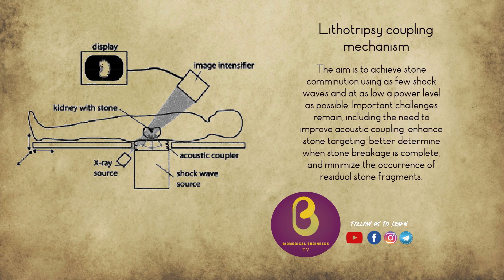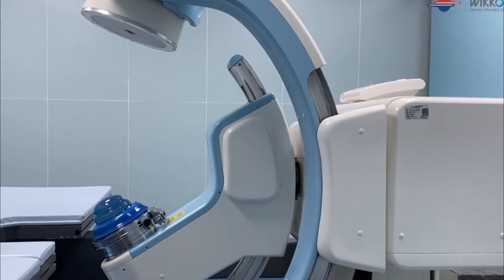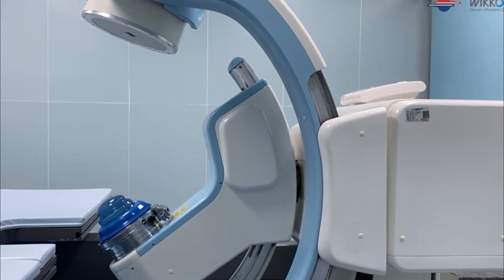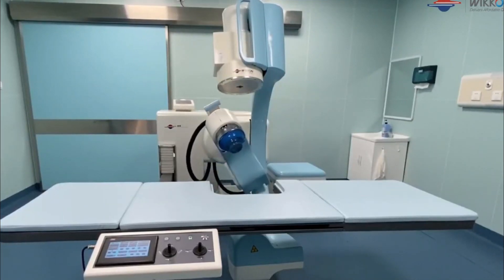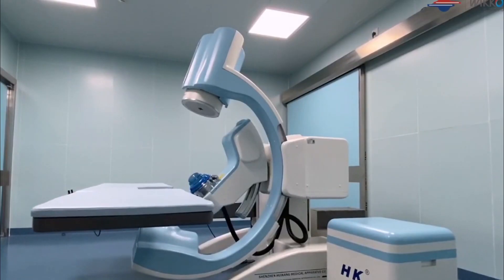In first generation lithotripters like the Dornier HM3, the patient was placed in a water bath. With second and third generation lithotripters, small water-filled drums or cushions with a silicone membrane are used instead of large water baths to provide air-free contact with the patient's skin. This innovation facilitates treatment of calculi in the kidney or ureter, often with less anesthesia than required with first generation devices.